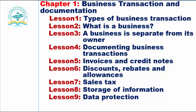Lesson 1 is Types of Business Transaction. In lesson 2 we are going to find the answer to what is a business. In lesson 3 we are going to see why a business is separate from its owners. Lesson 4 focuses on documenting business transactions. Lesson 5 focuses on invoices and credit notes. Lesson 6 discusses discounts, rebates and allowances. Lesson 7 is a summary discussion of sales tax, and we would have an introduction about it because the subsequent chapters will focus on detail. Lesson 8 we are going to see why we store our information. Lesson 9 we are going to see about the importance of data protection.